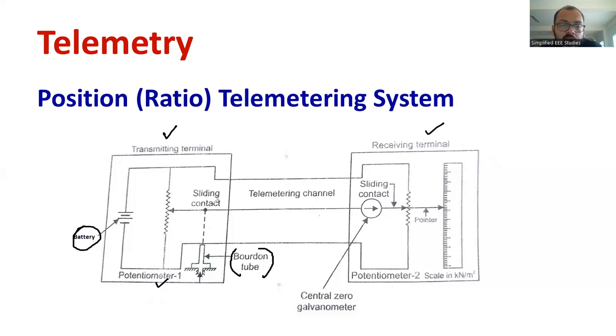Moreover, at the receiving end side, we can see the potentiometer two. Even potentiometer two is also operating based on the same DC power supply. Same battery will be provided for the supply to the potentiometer two as well. In the potentiometer two, the slider is connected and the output is directly given to a scale, a pointer with the scale. Can you see the scale?